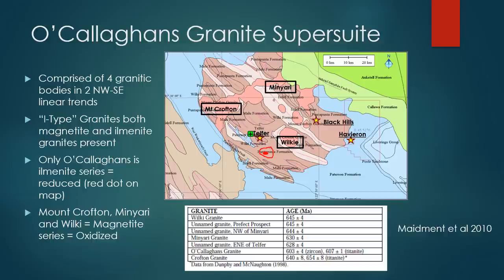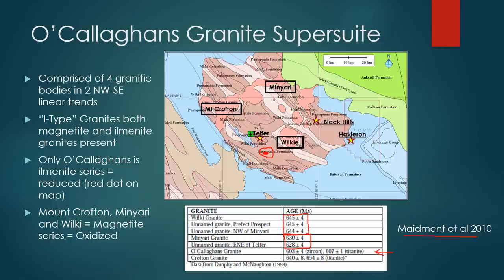In terms of the ages of these granites, they have been dated in discrete periods: one around 650 to 645 million years, the next around 630 million years, and the last — the O'Callaghan's — at around 605 million years. This is important because it shows a 50 million year emplacement window with discrete episodes. Not all of these granites are necessarily linked to mineralisation. The Telfer mineralisation only aligns really with the oldest granites — the Wilkie Granite and the Mount Crofton Granite — which are the oxidised granites.